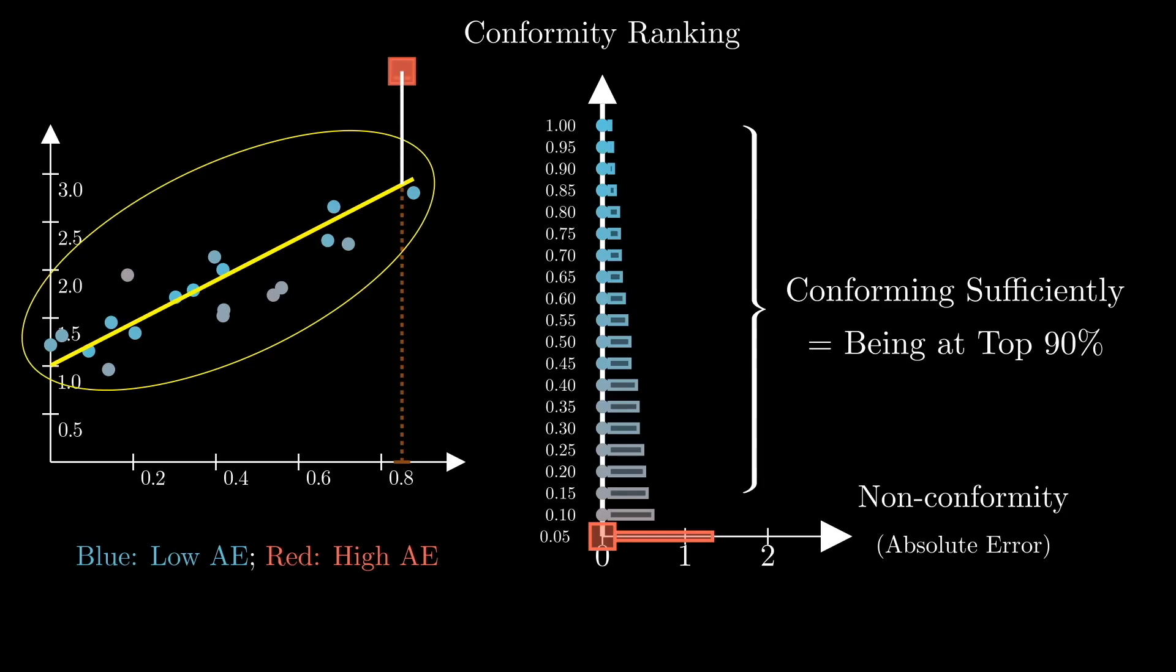To see this, let's fit a high order polynomial instead of the line, and note how the non-conformity of the points inside the bag - that is, all the points except the square - decreases, but the non-conformity of the square increases.